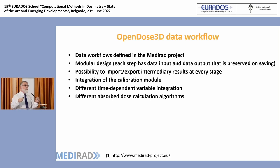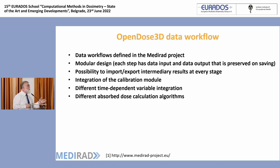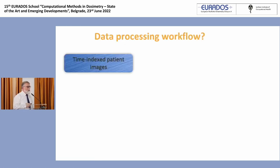The calibration factor is stored and passed to the dosimetry module, meaning there is no longer a source of error in integrating the calibration factor. It's also very good because if you change the calibration images due to a major change in your gamma camera, the software will not find the images and will tell you where the calibration images are. We have different time-dependent variable integration and different absorbed dose calculation algorithms.